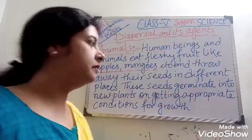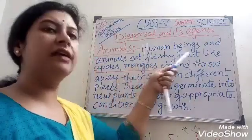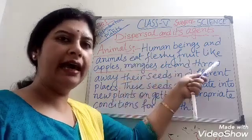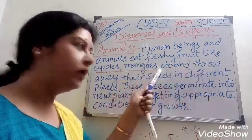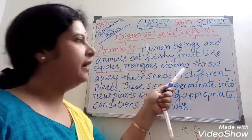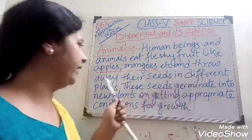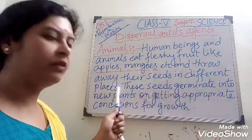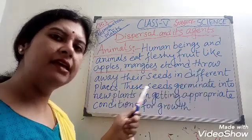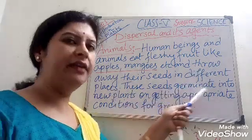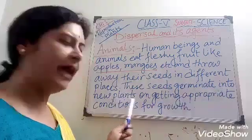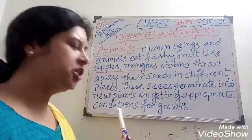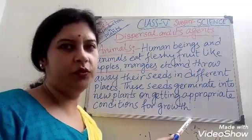Animals. Human beings and animals eat fleshy fruit like apples, mangoes, etc., and throw away their seeds in different places. These seeds germinate into new plants on getting appropriate conditions for growth.